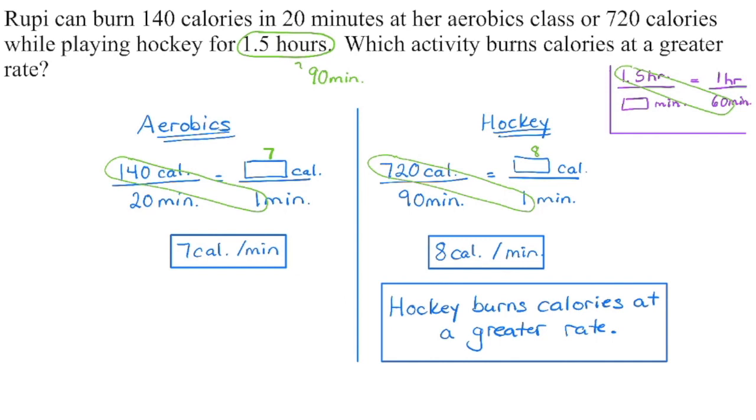And then once we have a unit rate for each activity, go back and see what the question is asking. So in this case, we want to know which burns at a greater rate. So we're burning one calorie per minute more in hockey than we are in aerobics. So it is hockey that burns at a greater rate.